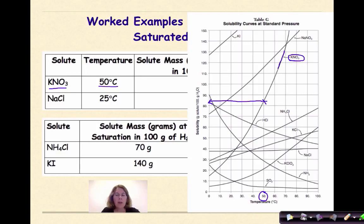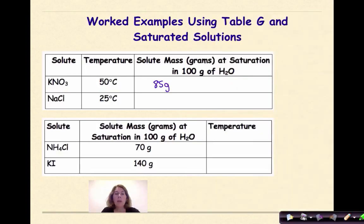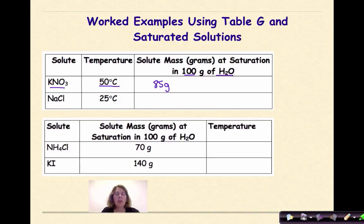So I'm going to write 85 grams. Again, that's potassium nitrate at 50 degrees Celsius — 85 grams of solute will dissolve in 100 grams of water at saturation. Let's look at the next one.